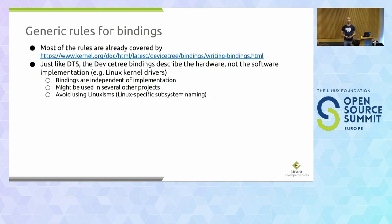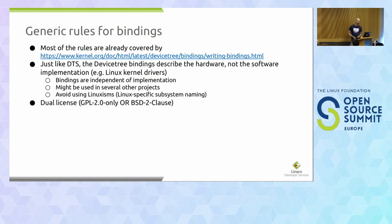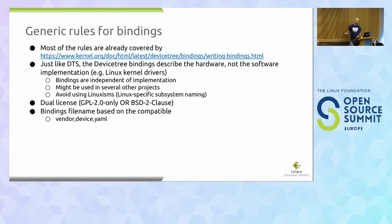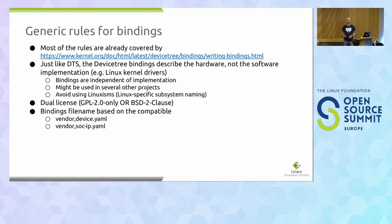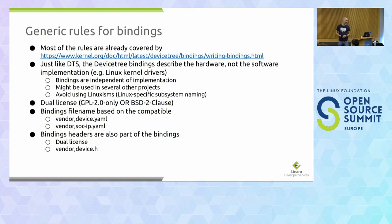For the same reason, we prefer not to use Linux-specific subsystem naming in the bindings. There are a few — like devrock or xcon — that are more Linux-specific, so avoid them. We want the bindings to be dual-licensed: GPL2 and BSD, for the purpose of reuse in other projects. We want the filename to be based on the compatible, so usually files should be named like vendor with a device or vendor with a SoC ID. Pretty often your driver comes with a header which is also part of the bindings; therefore we expect this to also be dual-licensed with a specific filename.